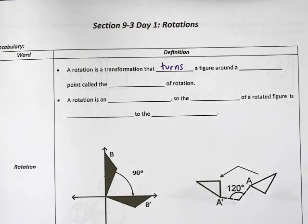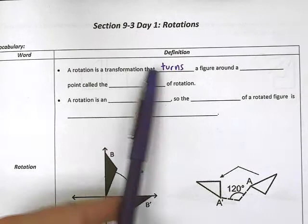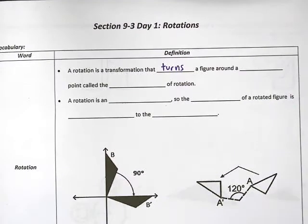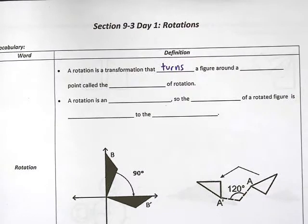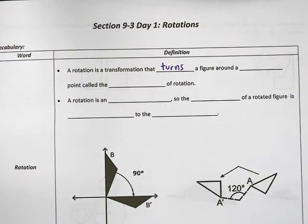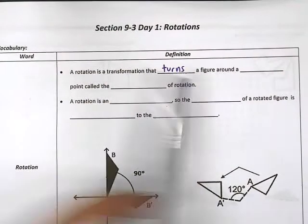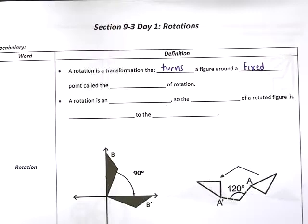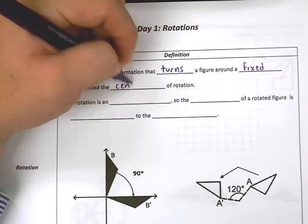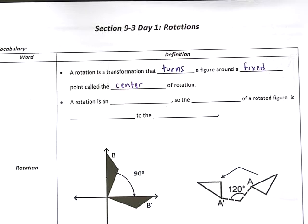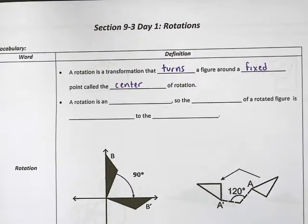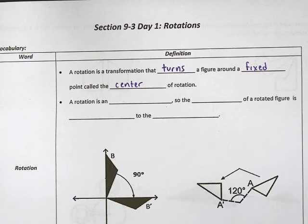As you can see, I already filled in this blank. I'm sorry about that. I actually goofed up the first time I started to make this video, so I'm going to just continue on, but start again with the video. So, a rotation is a transformation that turns a figure around a fixed point called the center of rotation.